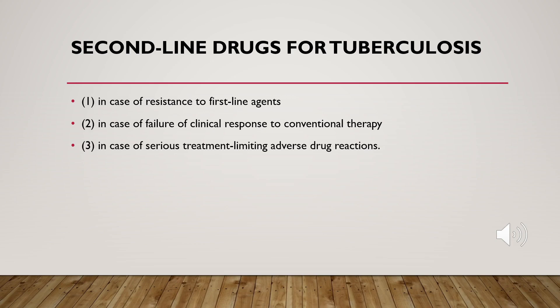Each of the first-line medications has potentially serious side effects such as hepatitis, optic neuritis, ototoxicity, and nephrotoxicity. If a patient develops one of these serious adverse effects or fails to respond to first-line medications, you switch to second-line drugs for the treatment of tuberculosis.